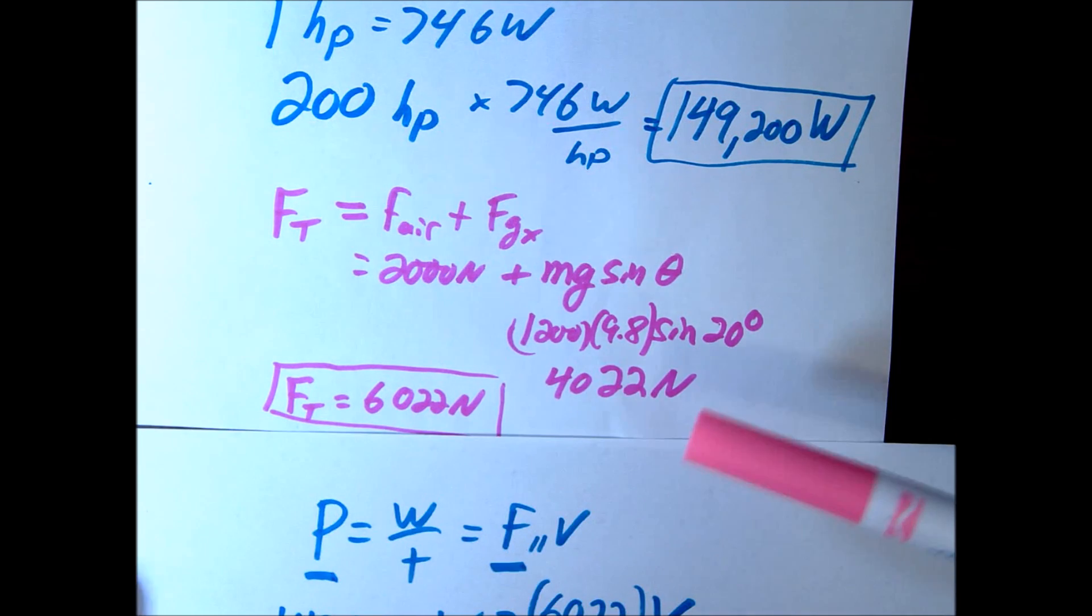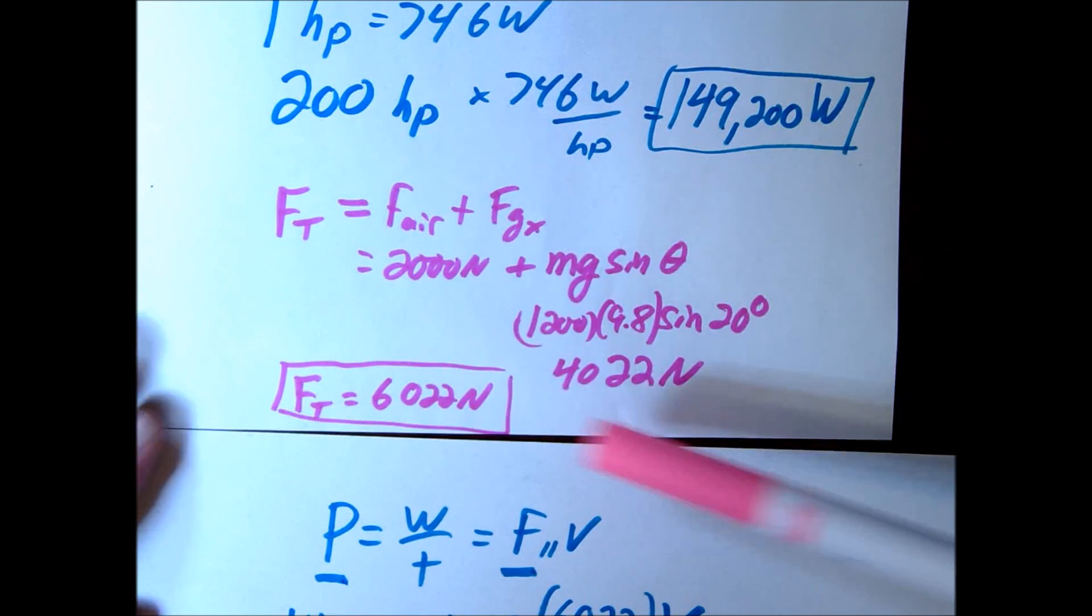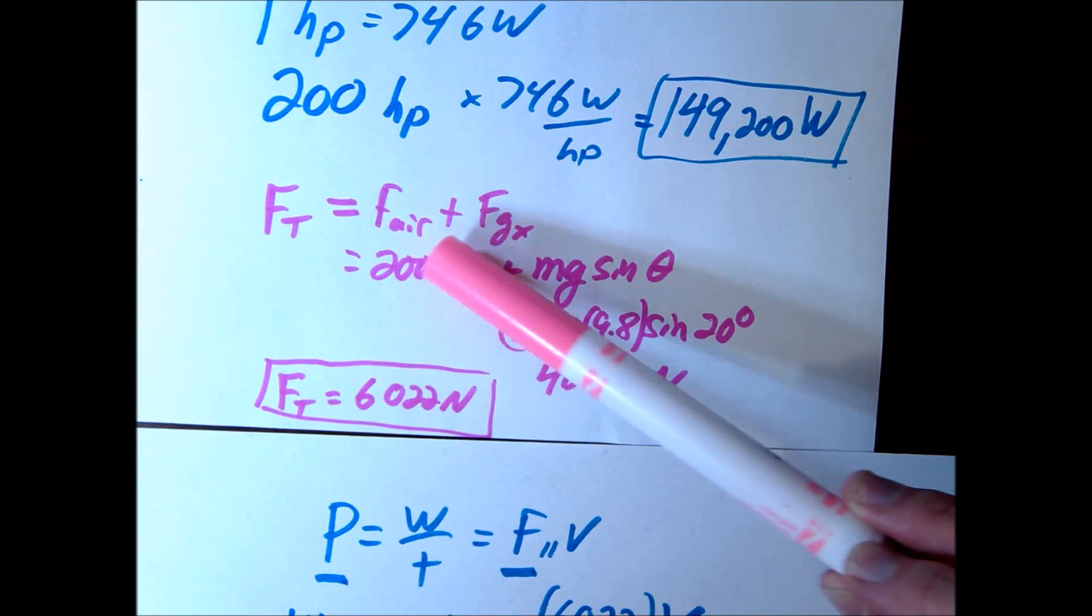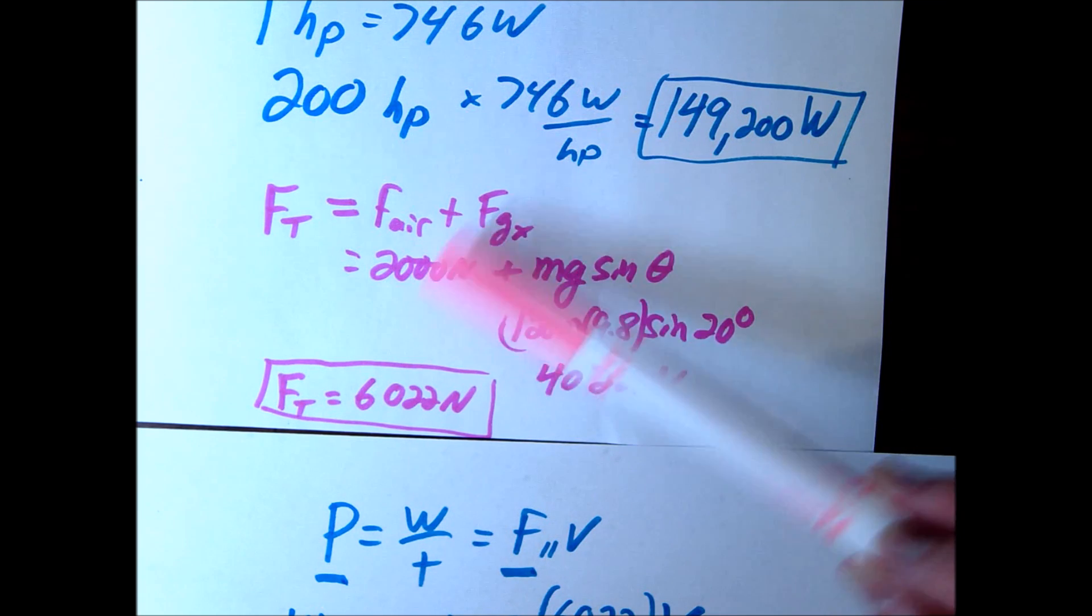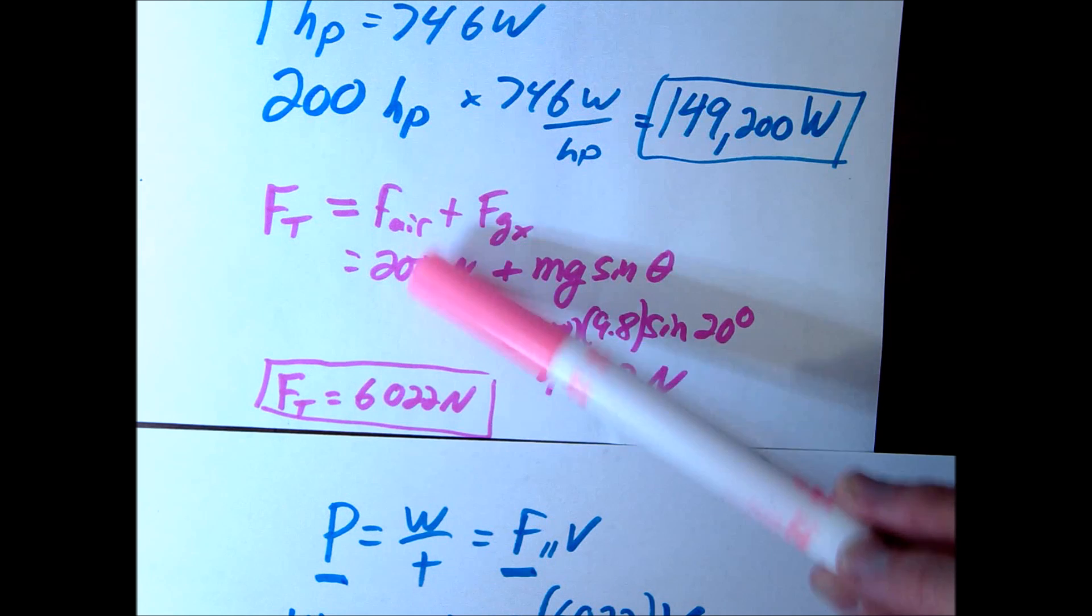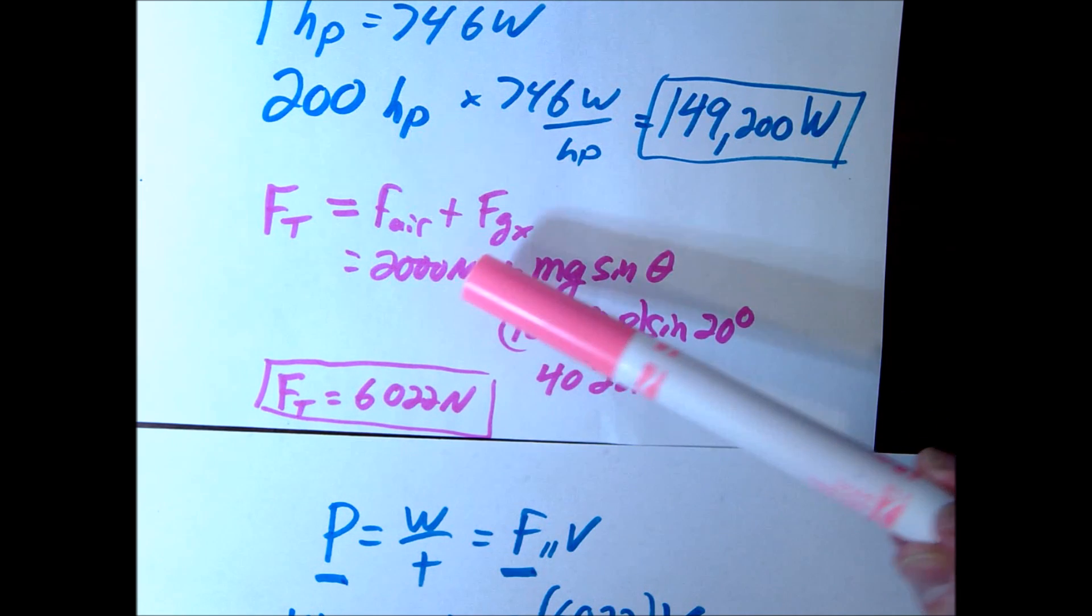Now, there's a subtle thing that we're not going to talk too much about. But air resistance itself is actually dependent on speed. And that means that the faster you go, the more air resistance there's going to be. So it's not a static number such as this 2000.